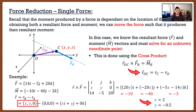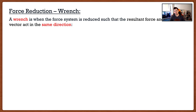That's the first kind of question they can ask after we get our couple system. Now the second one — and this is if you really make your professor angry — is a wrench. You might say: isn't that something we turn a bolt with? Well, yes. But a wrench in statics is when our force couple system is reduced such that the resultant force and the resultant moment act in the same direction.